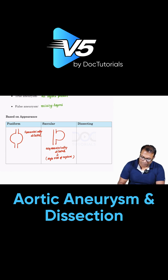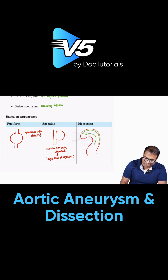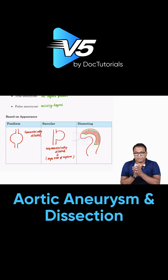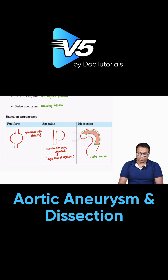A dissecting aneurysm is an aneurysm happening in the blood vessel. Within the three layers — tunica intima, media, and adventitia — blood flows into one of the layers, creating a false lumen. This false lumen creation is called a dissecting aneurysm.